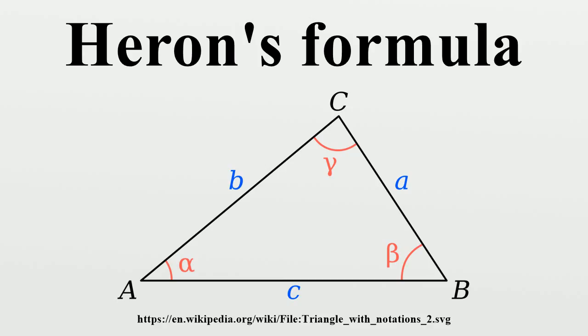Heron's formula states that the area of a triangle whose sides have lengths a, b, and c is the square root of s(s-a)(s-b)(s-c), where s is the semi-perimeter of the triangle.